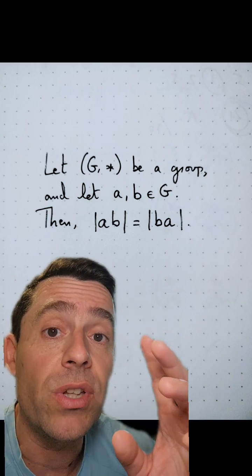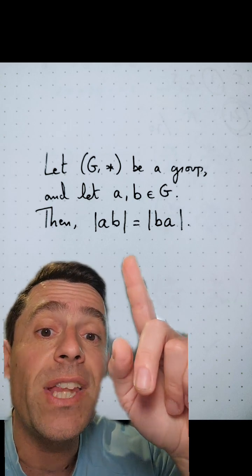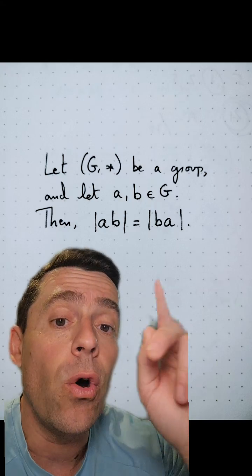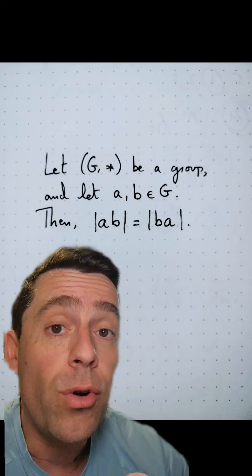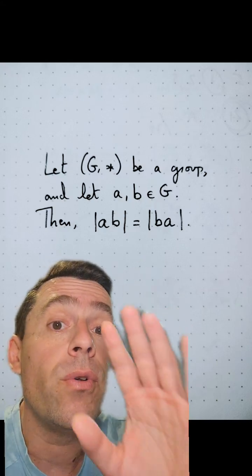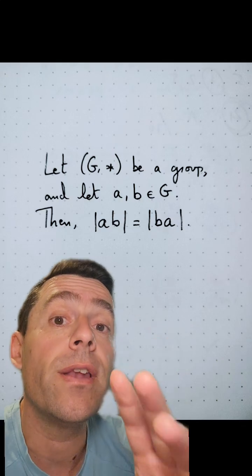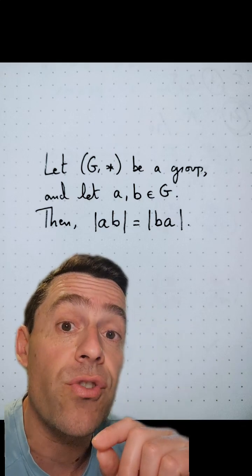But what if G is not commutative? How do we know that the order of A times B is the same as the order of B times A? I'm going to do a proof. If you want to try it on your own, stop the video here and do it, and then you can watch the proof.